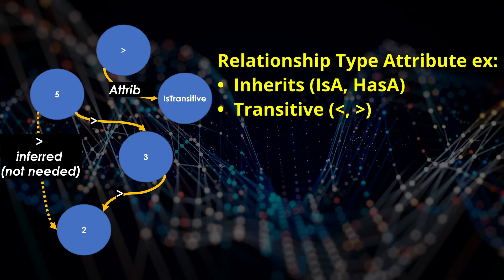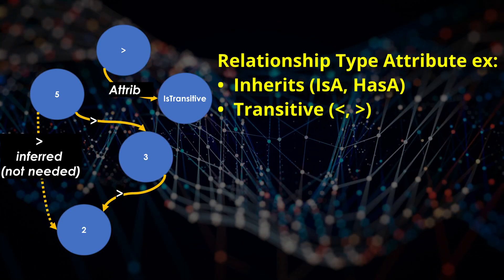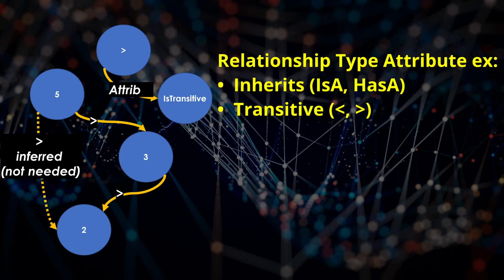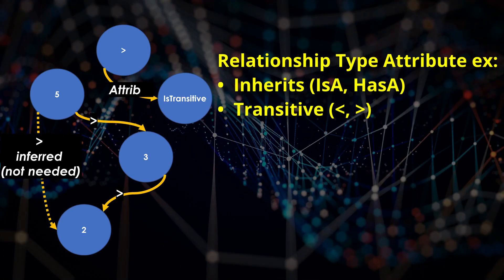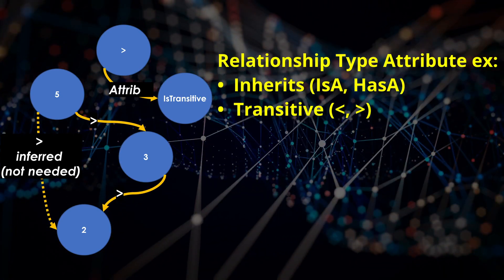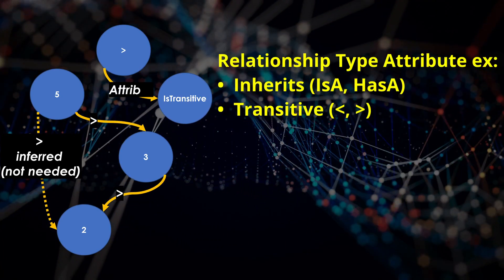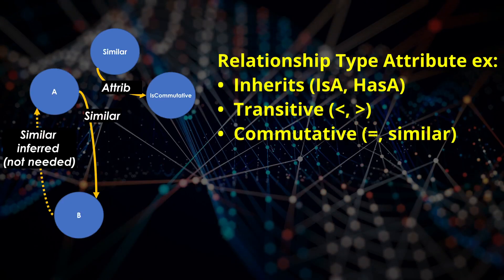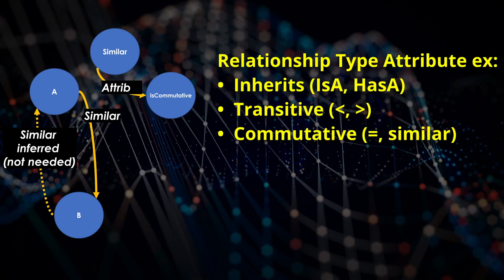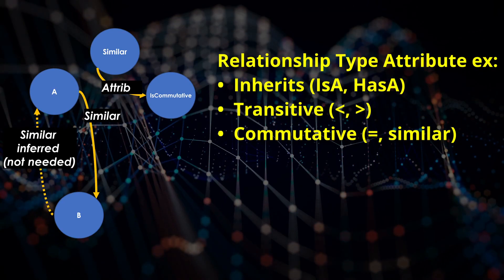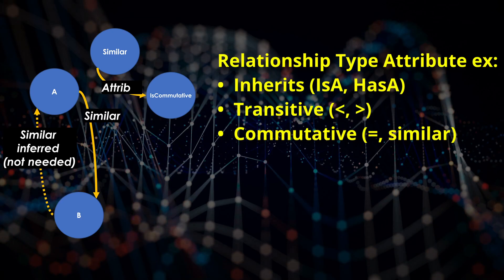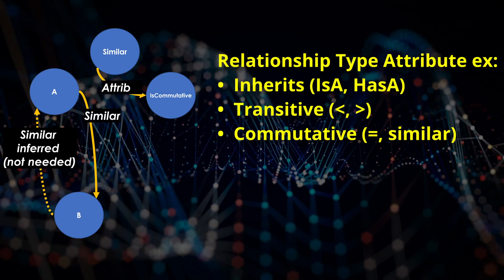Greater than is an example of a relationship type with a transitive attribute. For example, 5 is greater than 3, 3 is greater than 2, implies that 5 is also greater than 2. Is-similar is a relationship type which has an attribute of being commutative. If A is similar to B, then B is similar to A.